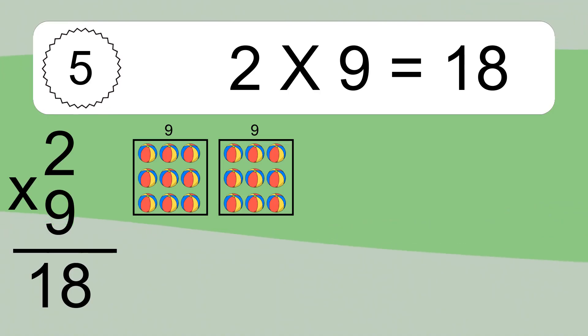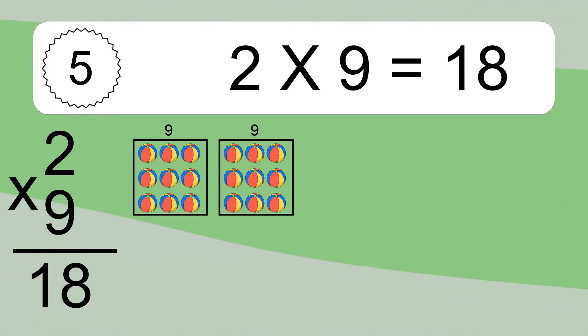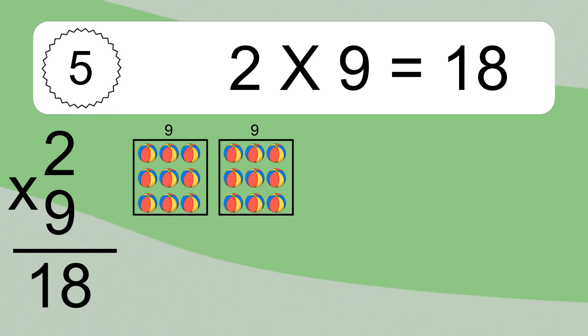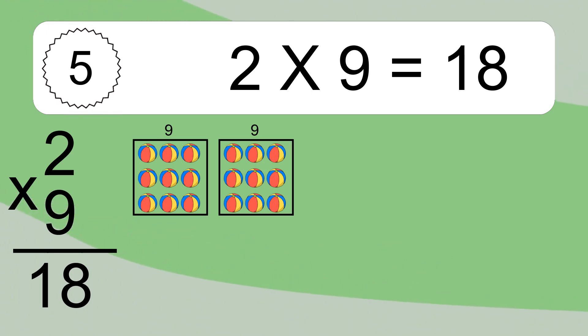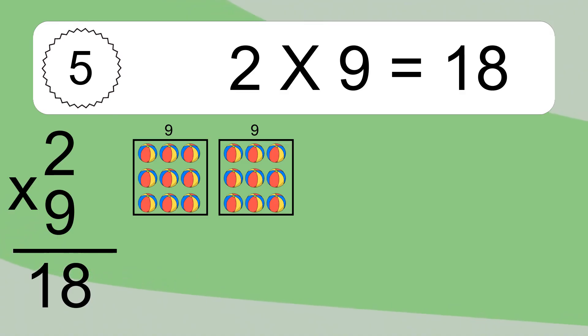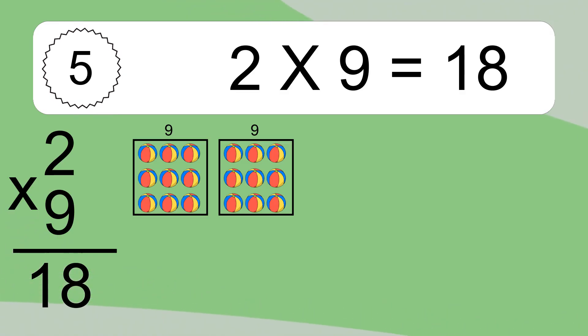We have 2 boxes, and each box has 9 colorful balls inside. If you count all the balls in all the boxes together, you will have 2 times 9 balls. This equals 18 balls.